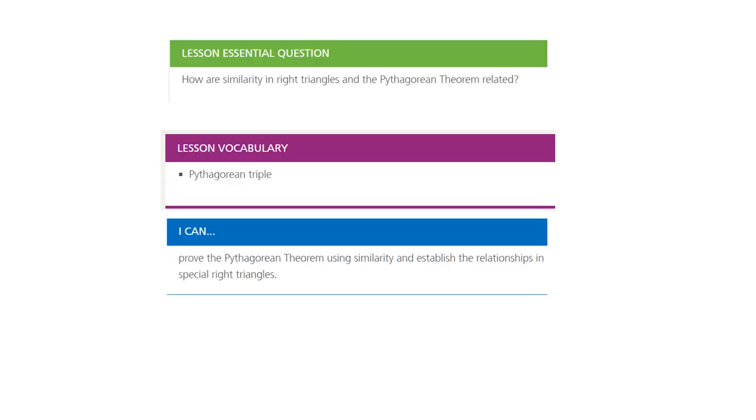Going back to our first lesson, the essential question is about how are similarity and right triangles and the Pythagorean theorem related. Our vocabulary that we will be covering, the word is Pythagorean triple. After you're done with this lesson, you will be able to prove the Pythagorean theorem using similarities and establish the relationship in special right triangles.